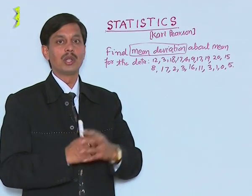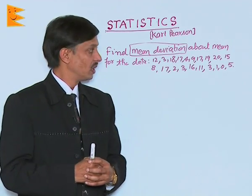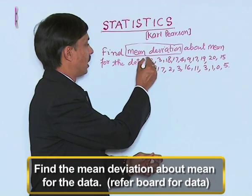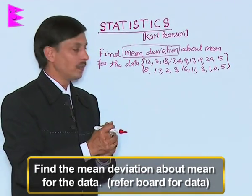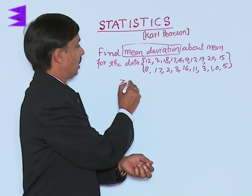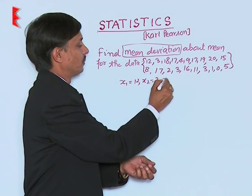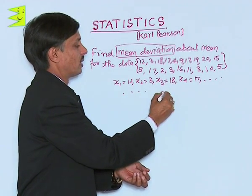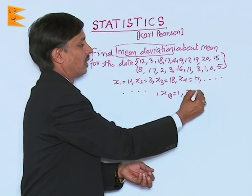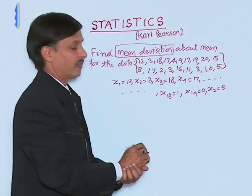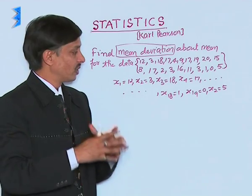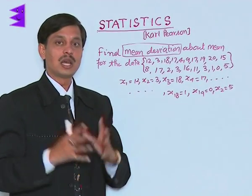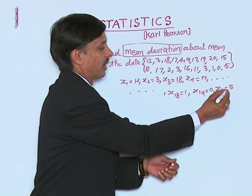Now in class 11th, I want to introduce a new concept after mean and median. The concept is to find the mean deviation about the mean. The data given has observations x1=12, x2=3, x3=18, x4=17, and so on up to x18=1, x19=0, and x20=5. In total there are 20 observations, so the last observation x20 is 5.